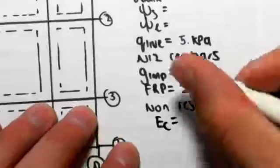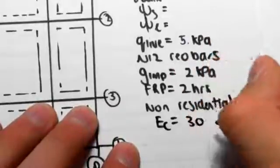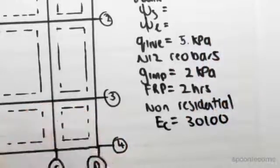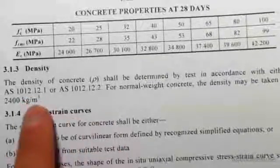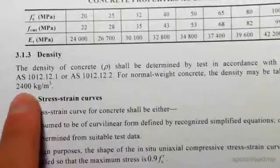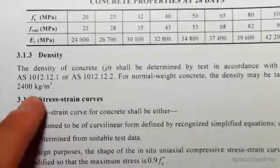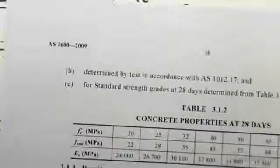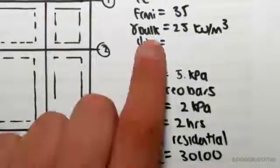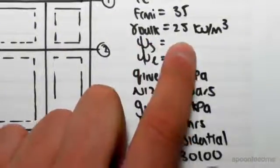Now the code says that the density of concrete shall be taken as 2,400 kilograms per meter cubed. Now that's just normal concrete. We're dealing with reinforced concrete, so we're going to just add a bit of density to that and say that our gamma bulk, our gamma density, is 25 kilonewtons per meter cubed.